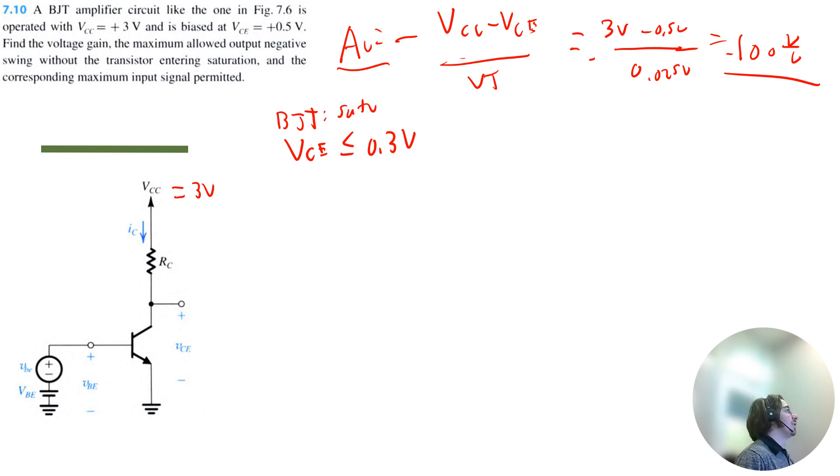So this is when we're hitting saturation. And I want to highlight, this is the lowercase vCE, not the uppercase one up here. So that means the maximum allowable output voltage swing would be capital VCE minus this lowercase vCE.